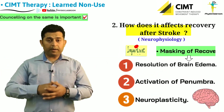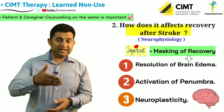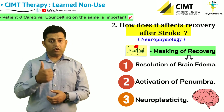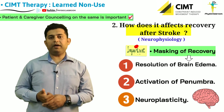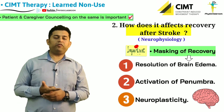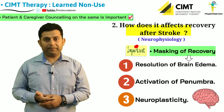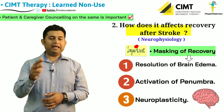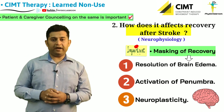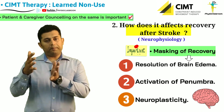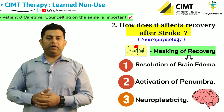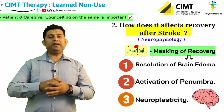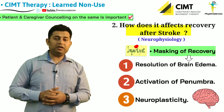Knowing about these three steps of neurological recovery — resolution of edema, activation of the penumbra area, and neural plasticity — the therapist can easily understand what masking of recovery is, and the same needs to be explained to the patient to keep them motivated.